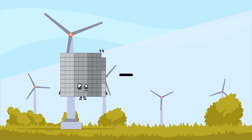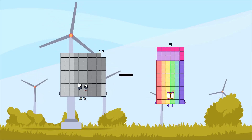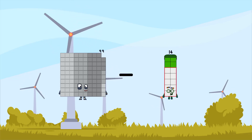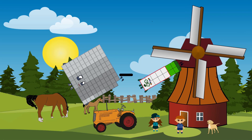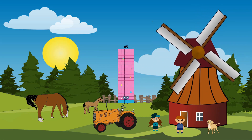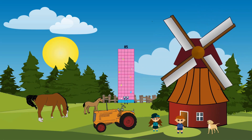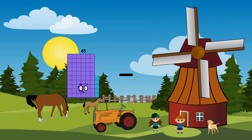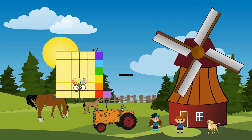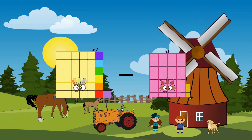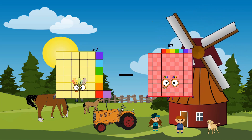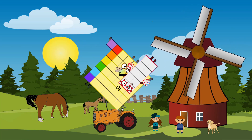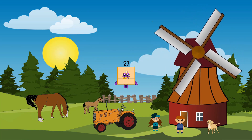99 minus 14 equals 85. 37 minus 10 equals 27.